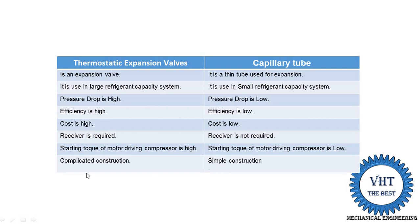The last point is that the thermostatic expansion valve has a complicated construction, which is why its cost is high. The capillary tube has a simple construction — it is simply a small diameter copper tube that is wound — so its cost is lower.